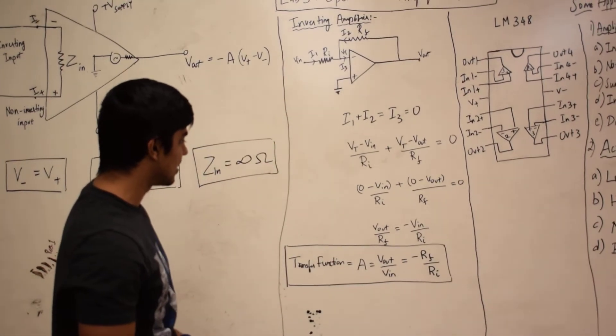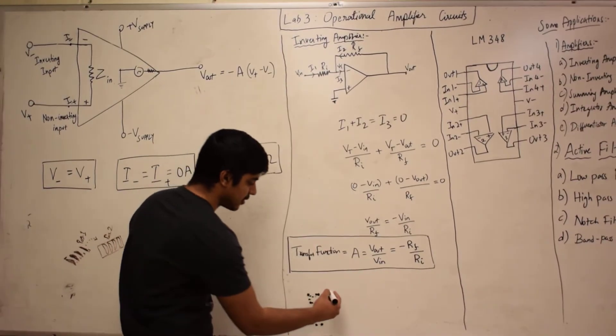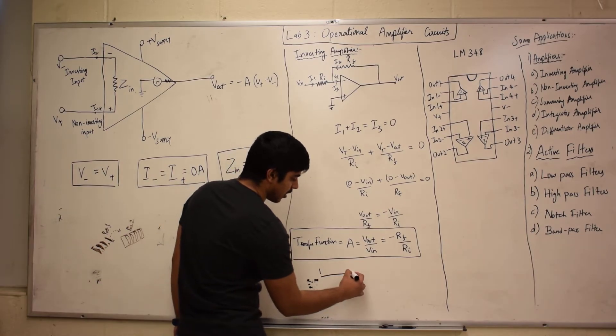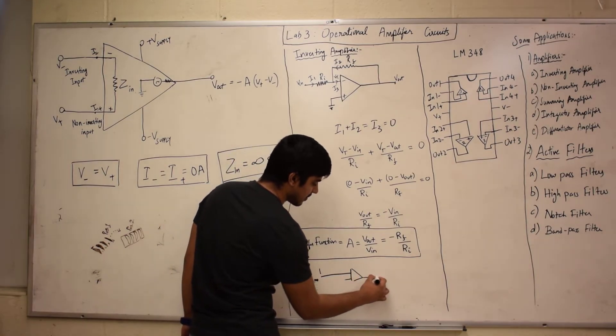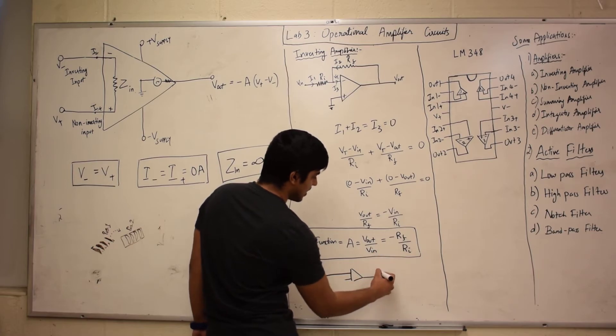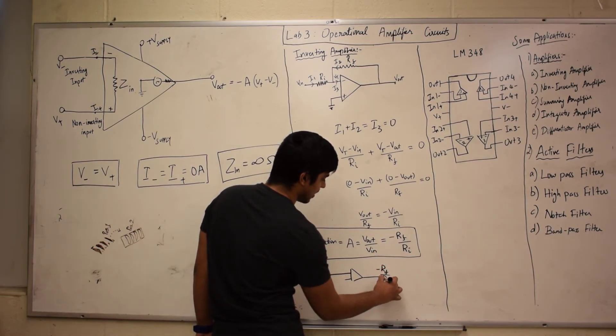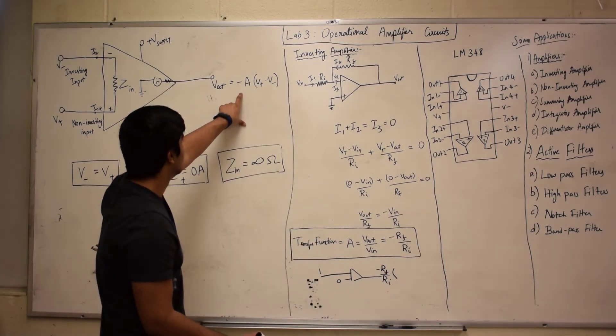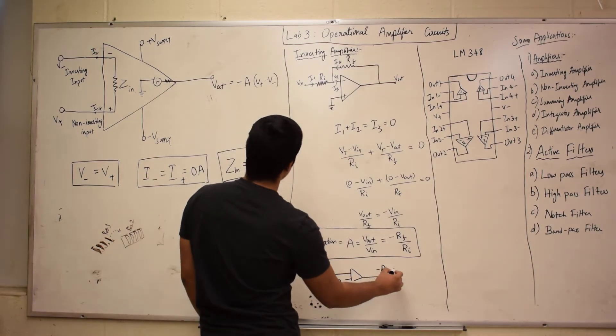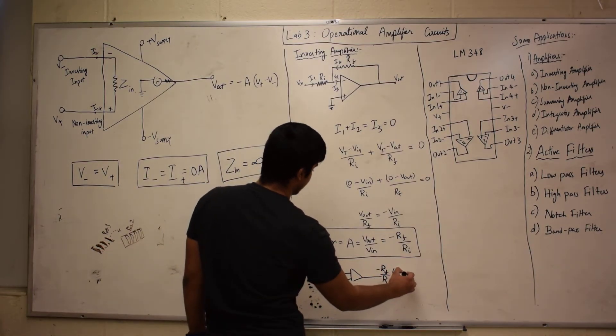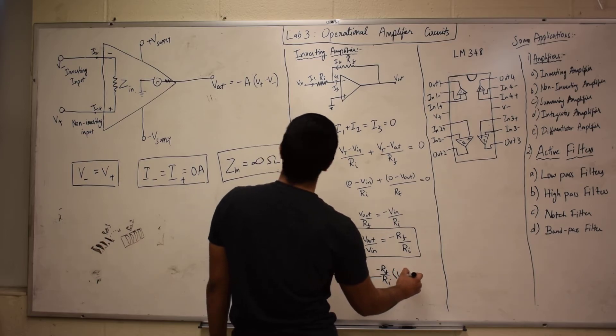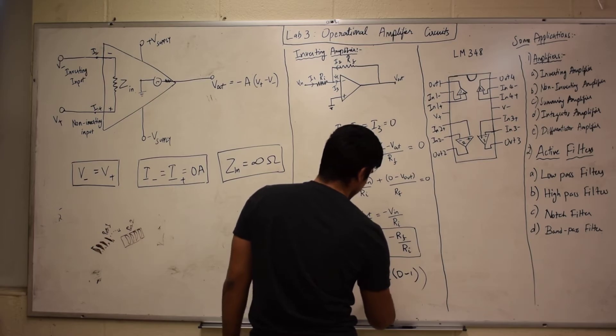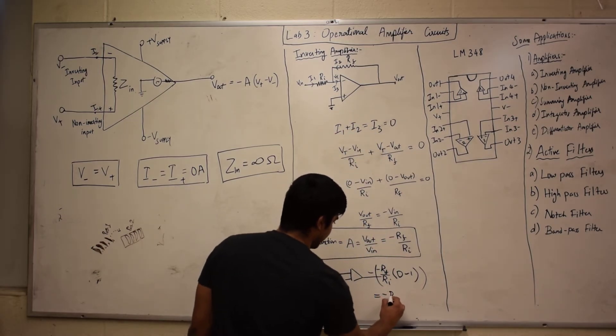So basically what this means is, if you give an input of one, your output would be -RF/RI times—you can see from here—when V+ is one and V- is zero, which gives you -RF/RI.